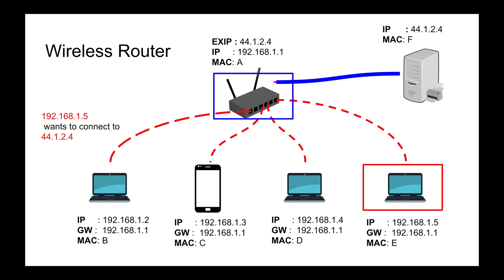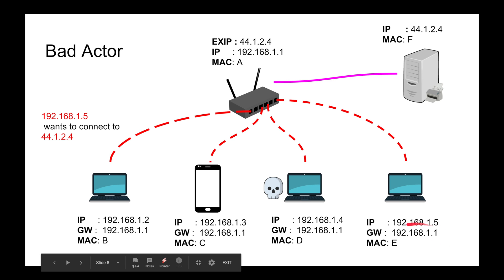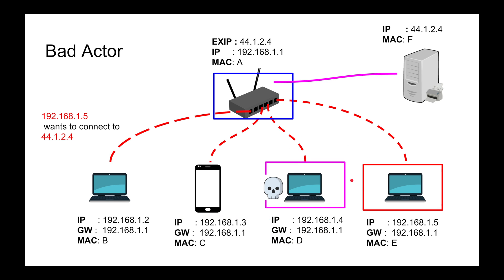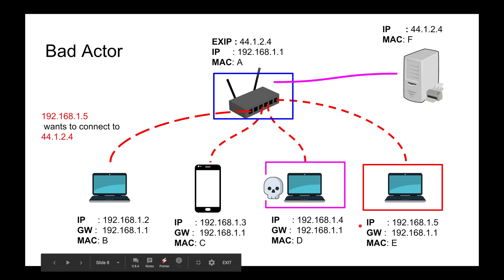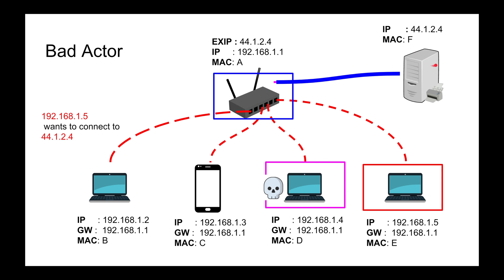What Tom was talking about is the bad actor case — ARP spoofing. When you broadcast 'who has 192.168.1.1?', a bad actor on the network can reply before the router. If they're fast enough, they say 'that's me — 192.168.1.1 is me, send me your data.' You then think the bad actor's MAC address is the gateway, and you send all your traffic through them. That bad actor pretends to be the router, forwards your traffic to the actual router, and silently reads everything in between.